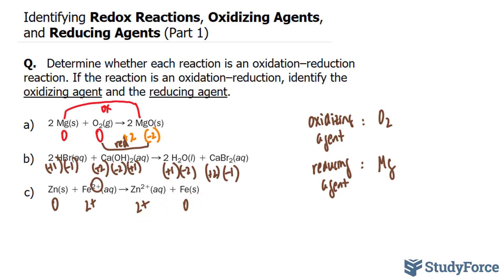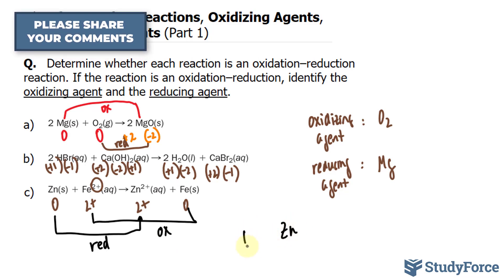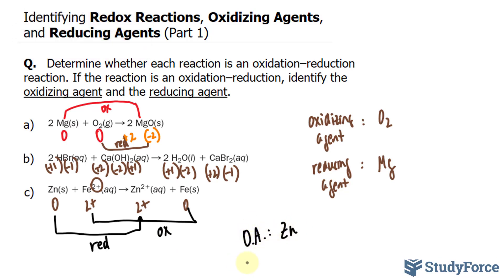There's a change. This has lost electrons and become more positive. This one goes from plus two to zero, which means it's gained electrons. Therefore, the oxidizing agent is Fe²⁺, which I'll represent as OA, and the reducing agent is zinc.